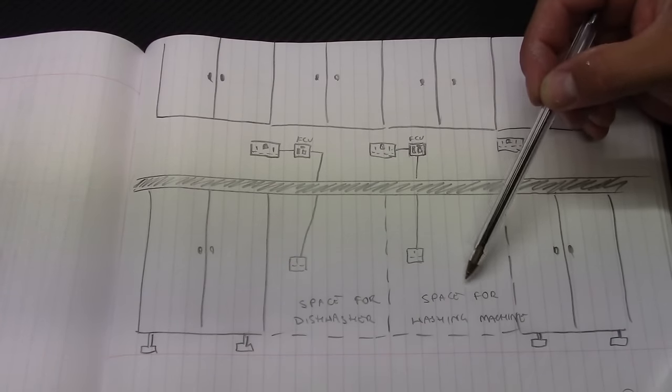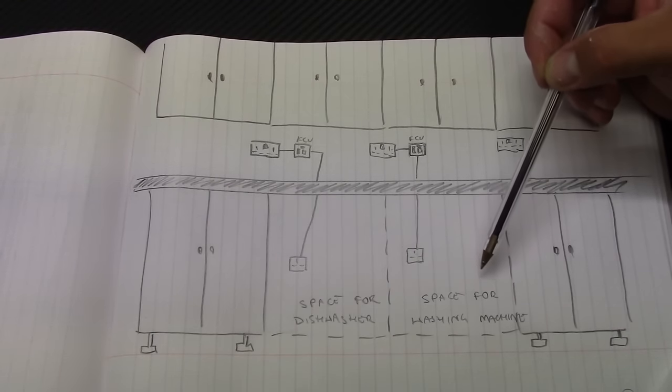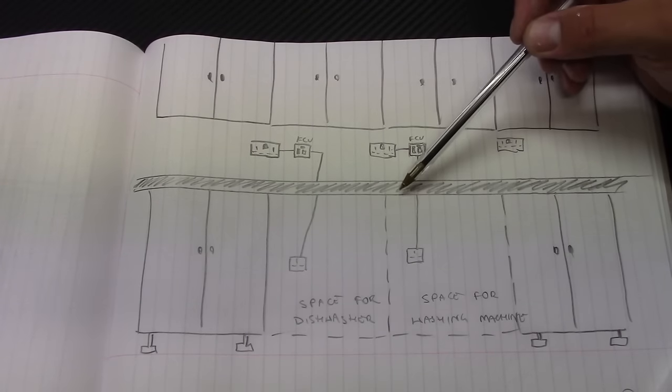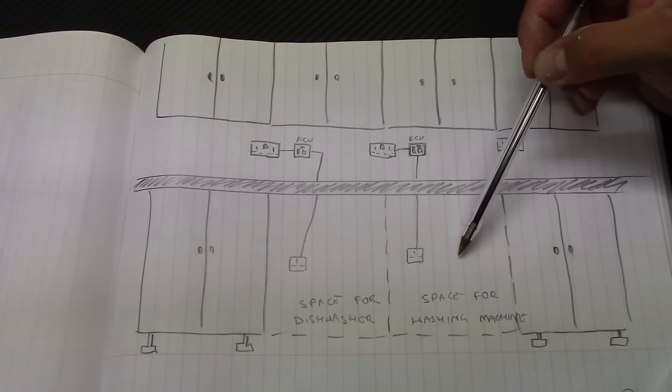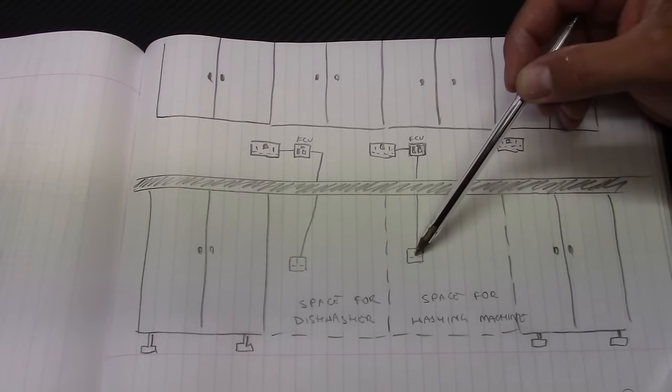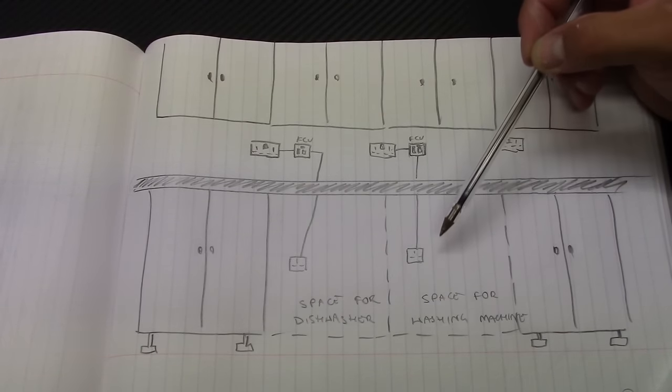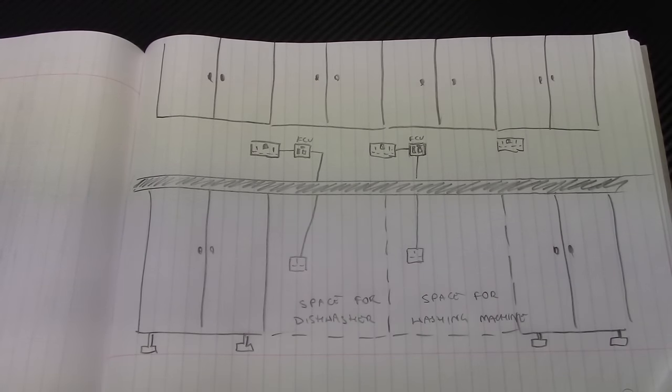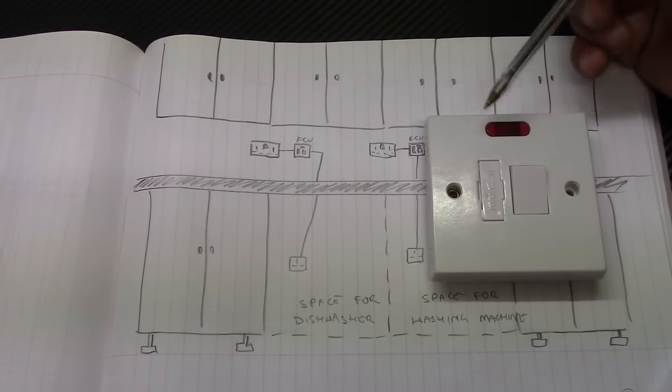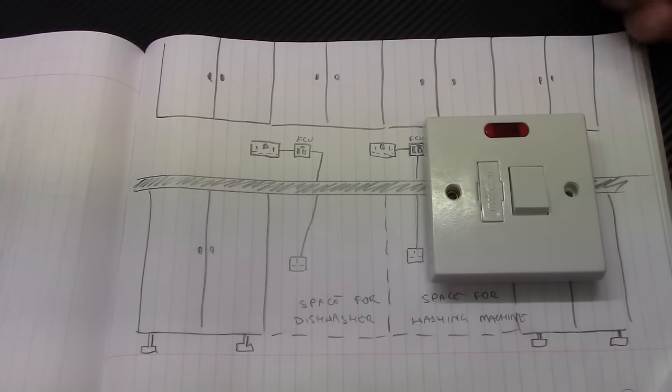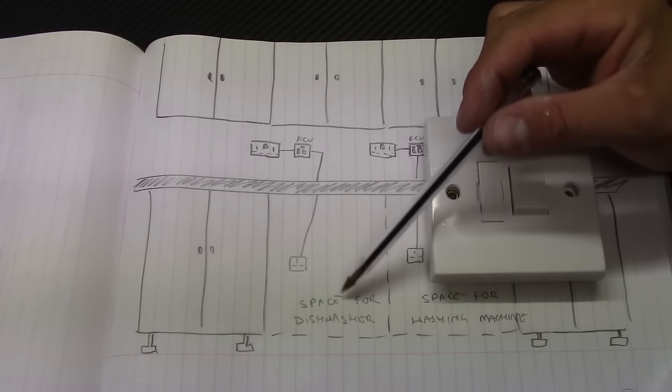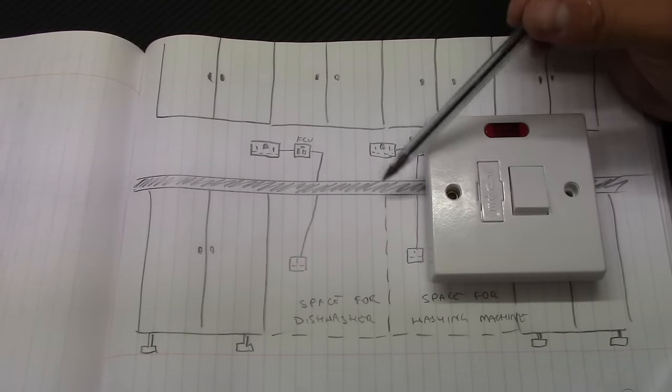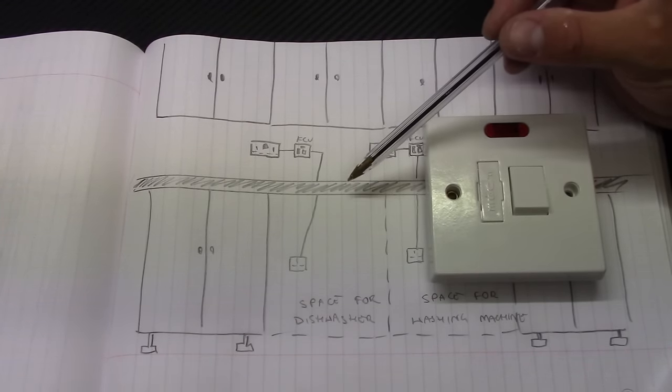Then you want to just switch off the washing machine completely just for safety. So then you don't need to pull it out and unplug it from this single socket outlet. You can just switch it like this. And the same with the dishwasher and many other appliances in the kitchen that are hidden or integrated under the worktop.